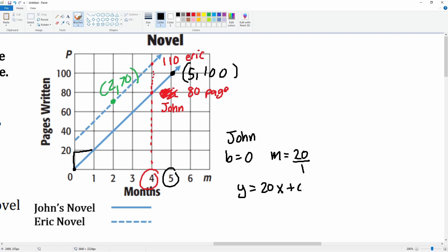plus zero. You can just write 20x. Okay, then let's take a look at the dashed line, which is Eric's. Eric's looks like he started at 30 pages, so b equals 30. He must have had some pages already written. And let's see how he went up.